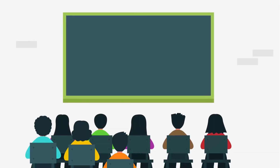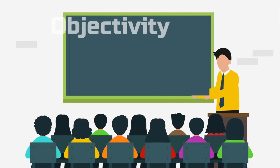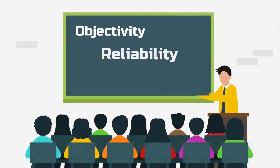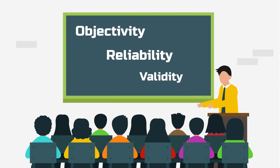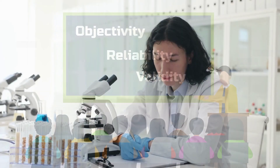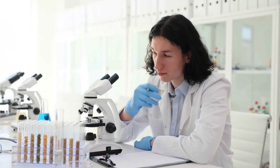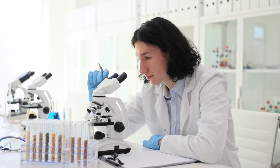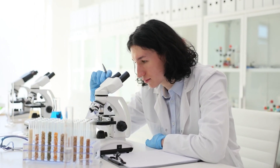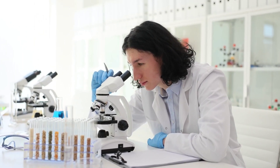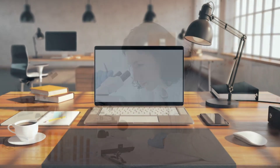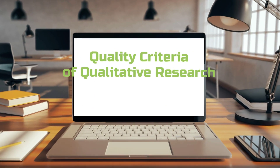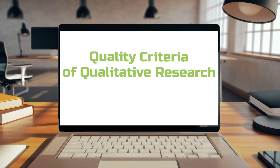You've probably heard of the quality criteria objectivity, reliability, and validity, right? These are characteristic of good quantitative research. But for qualitative research they mostly don't make sense. So please join me to explore the six quality criteria of qualitative research.